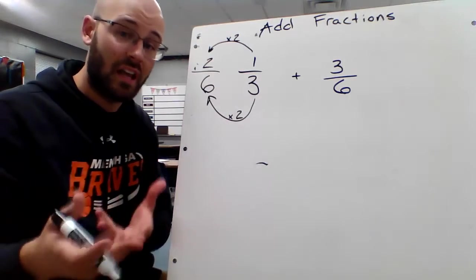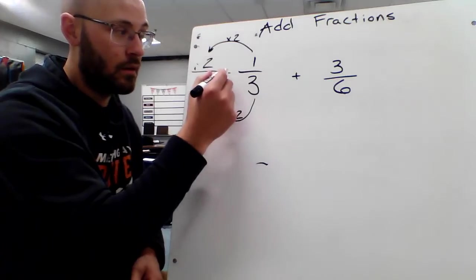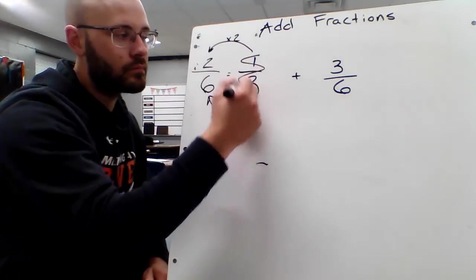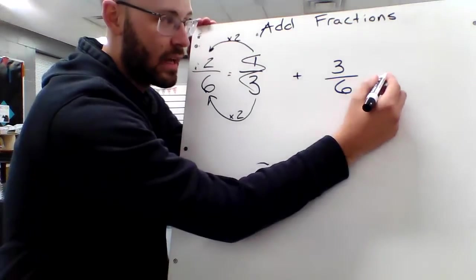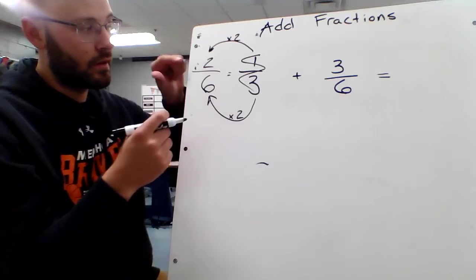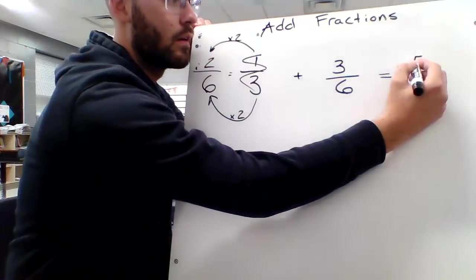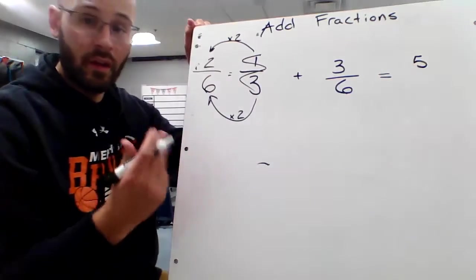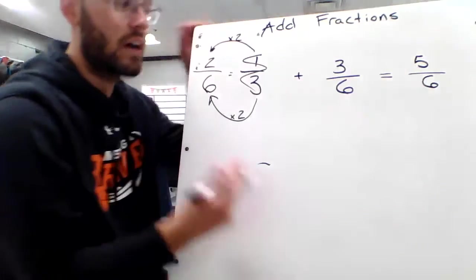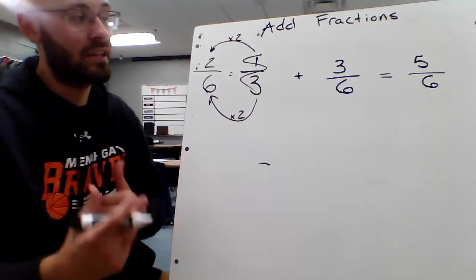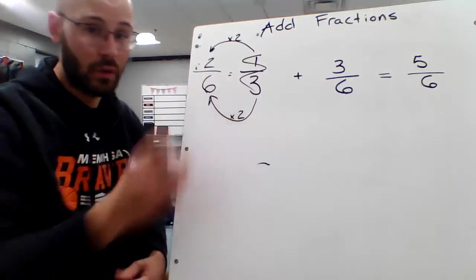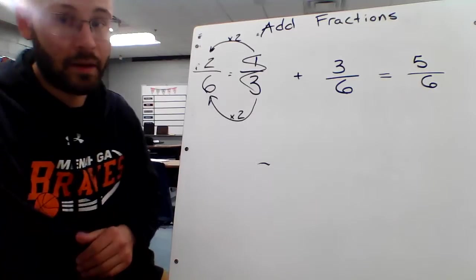2 sixths and 1 third are the same thing. They are equivalent fractions. I no longer need my old fraction anymore. When I add those together, I now add the numerators, just like Mr. Schroeder said earlier. 2 plus 3 is 5, and the denominator stays the same. It never changes. It's a common denominator. So the total answer here, 1 third plus 3 sixths, is 5 sixths. Because 1 third is also equal to 2 sixths. Common denominators. You need to find them.